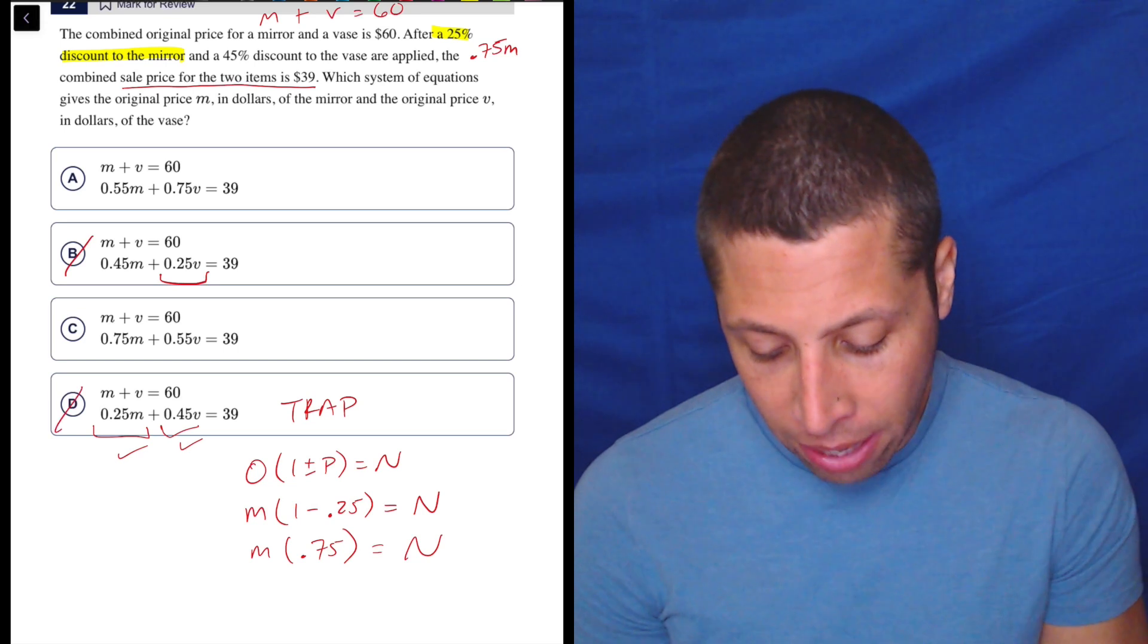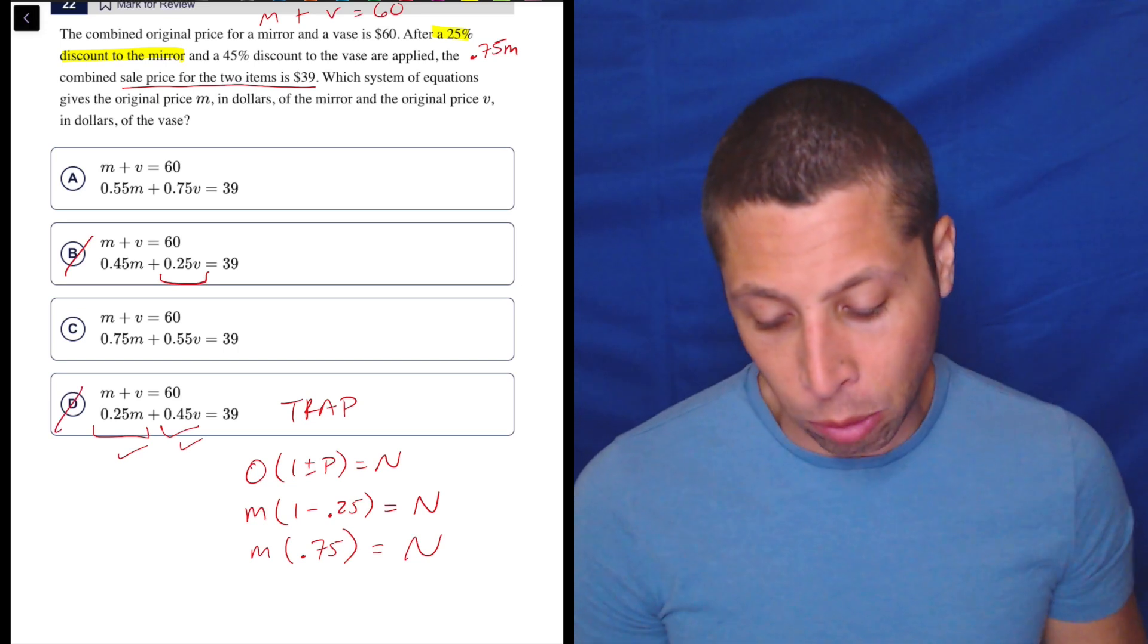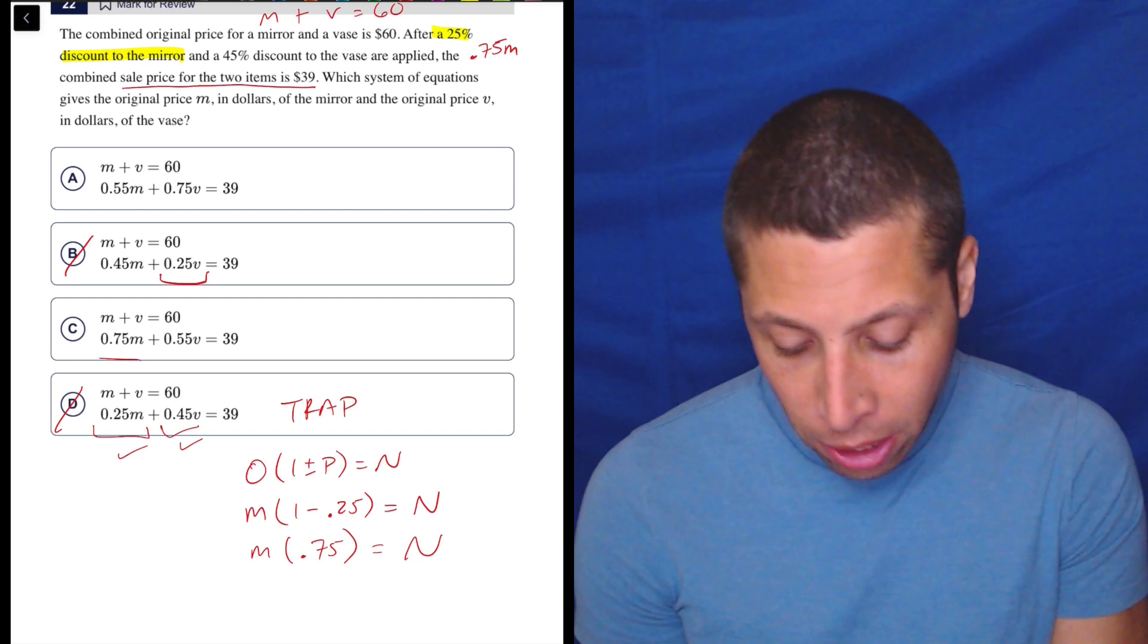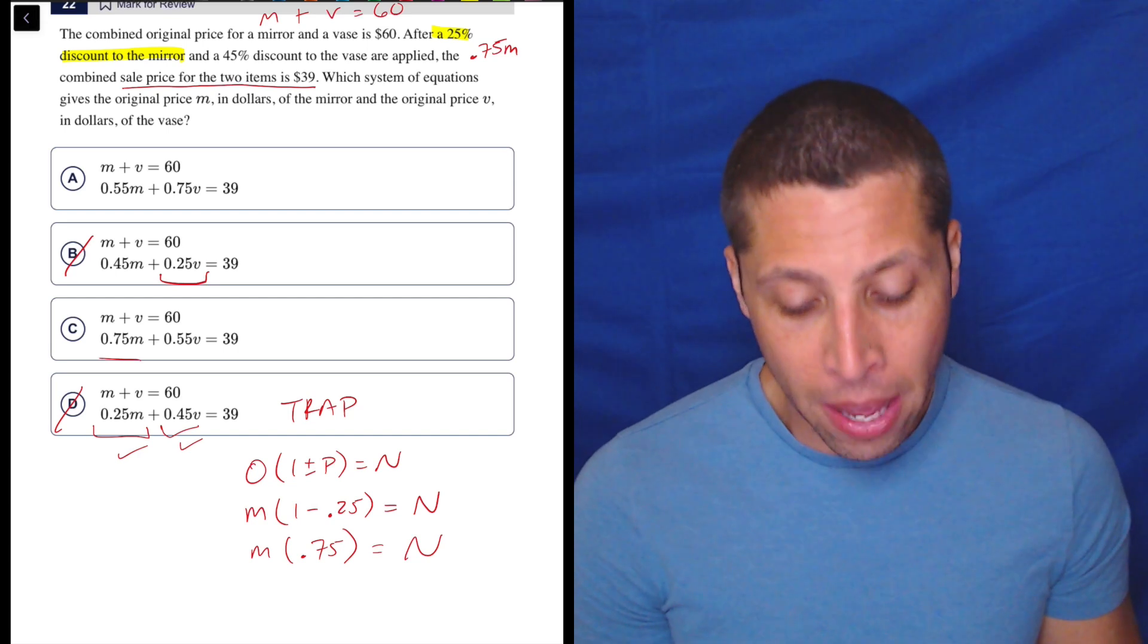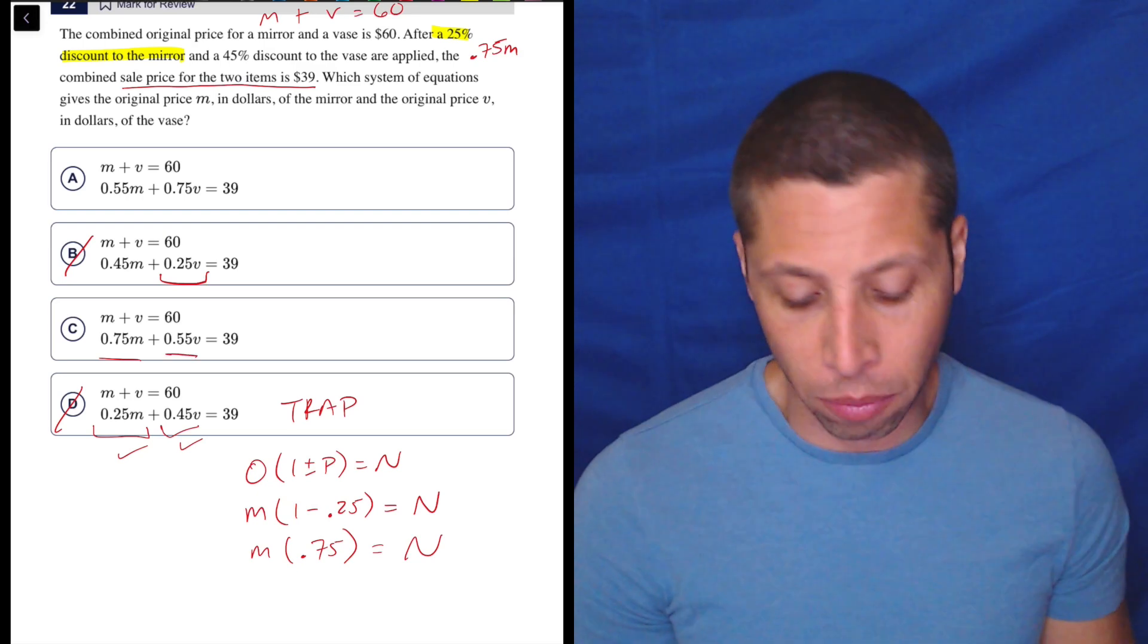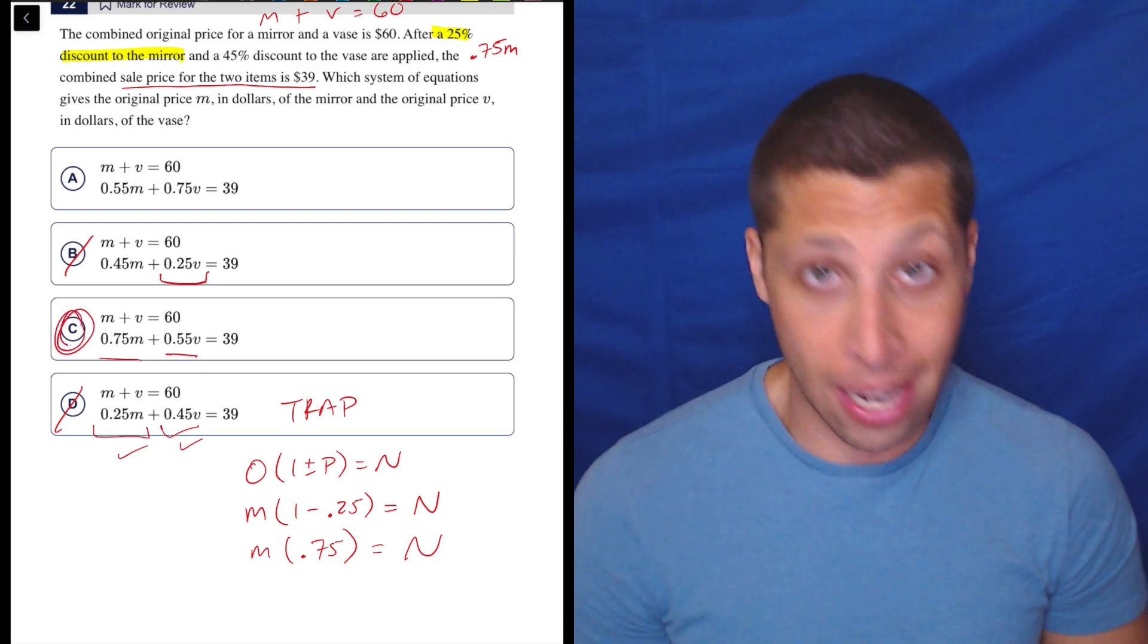So that's actually going to get rid of B, get rid of D. And then really the only difference between A and C is again, putting the number on the right variable. So here we have the 75% on the M. And if we did the exact same thing to the V, we would take off 45%, leaving us with 55%. So choice C is the answer.